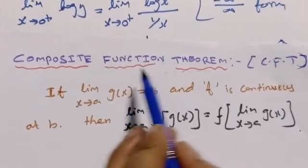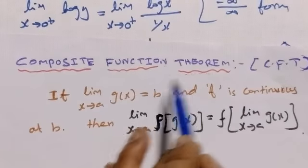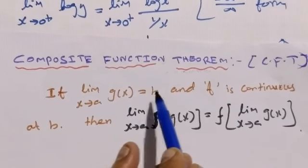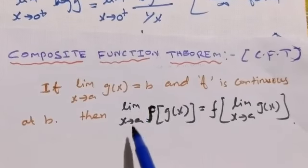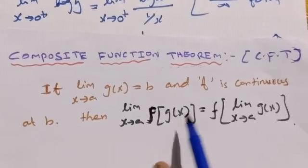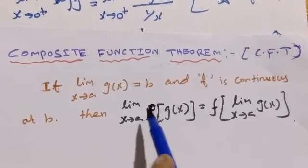Next we have the Composite Function Theorem, CFT, to apply. Composite Function Theorem: If limit as x approaches a of g(x) equals b, and f is continuous at b, then limit as x approaches a of f(g(x)) equals f of limit as x approaches a of g(x). This is the rule.